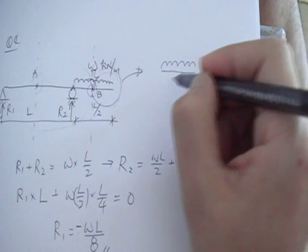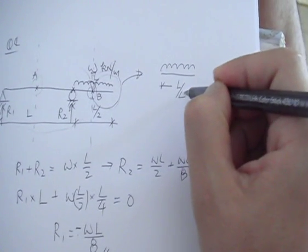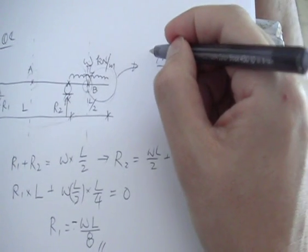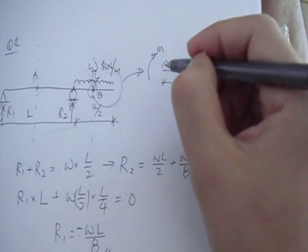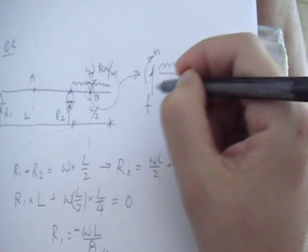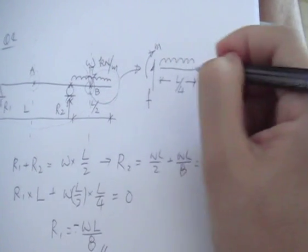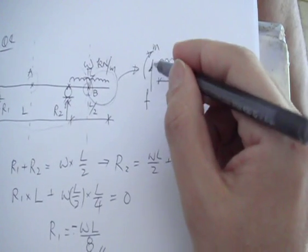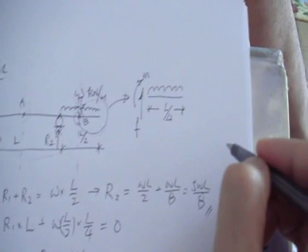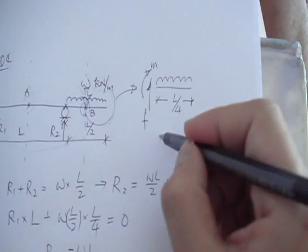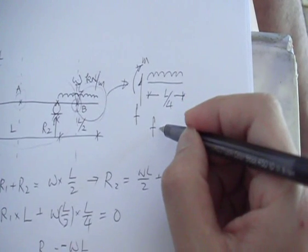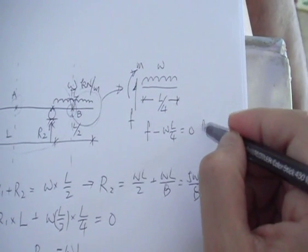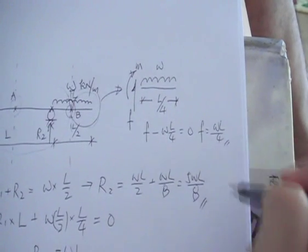The right part has length L over 4 and nothing on the right side. At this cut point, assume a positive bending moment and a positive shear force — sign convention: left up, right down. Doing vertical equilibrium: F minus W times L over 4 equals zero, so F is simply WL over 4.